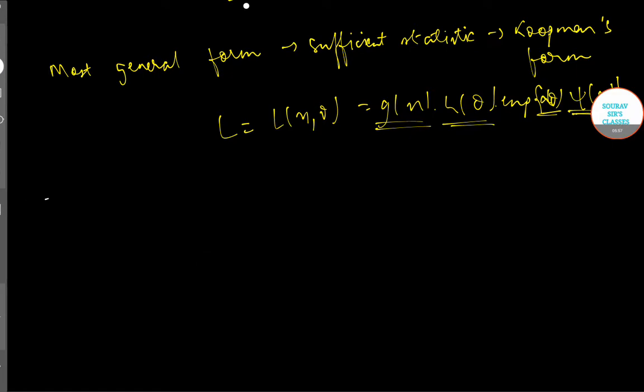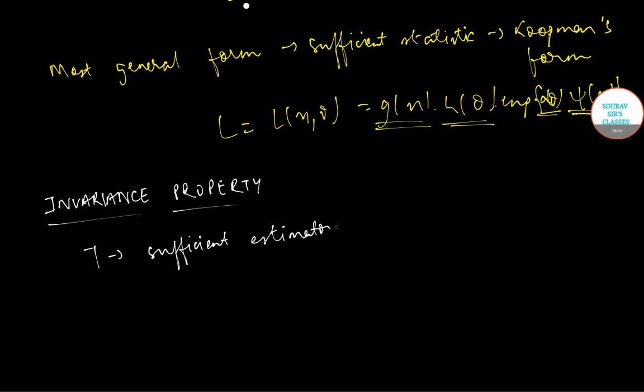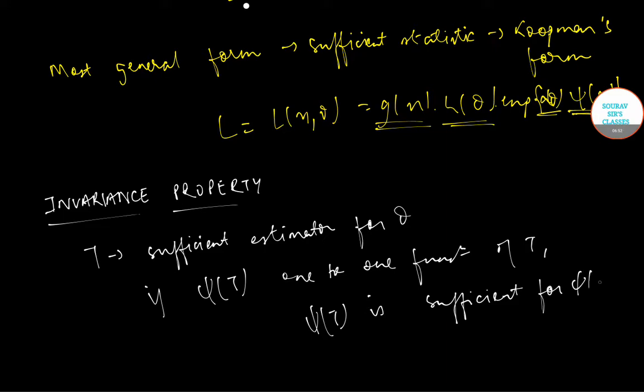Next, we have the invariance property of sufficient estimator. This states that if t is a sufficient estimator for theta and if psi(t) is a one-to-one function of t, then psi(t) is sufficient for psi(theta).